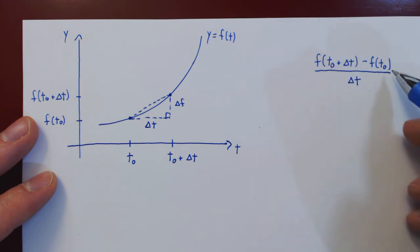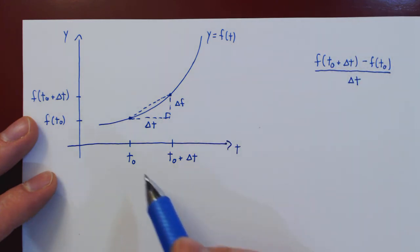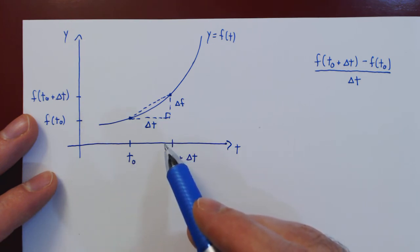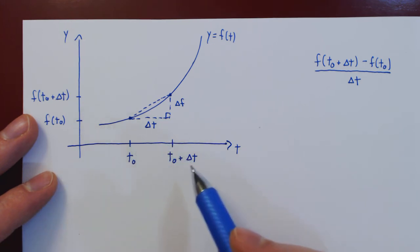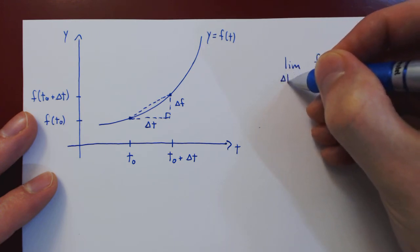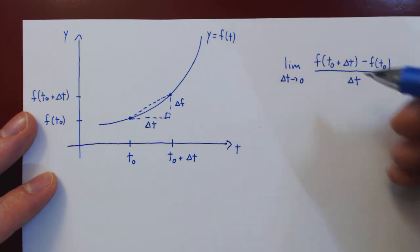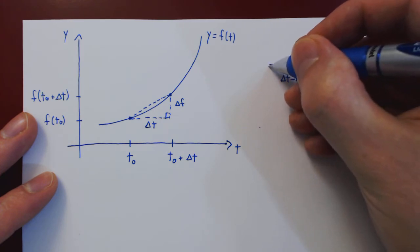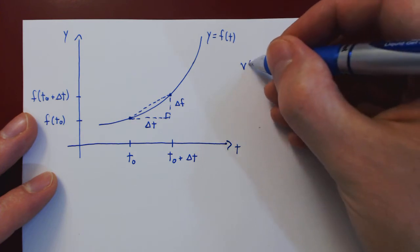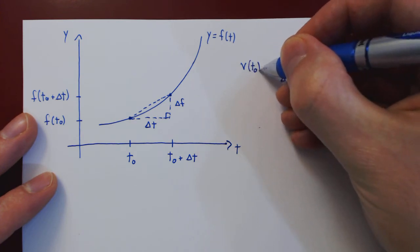So now we have the average velocity of the object over the given time interval. To obtain the instantaneous velocity of the object at this specific point in time, we have to let the length of the interval shrink to 0, therefore let delta t, the length of the interval, shrink to 0. This will return the exact velocity of the object, which we call the instantaneous velocity, at the point t0.